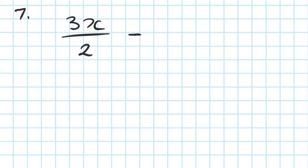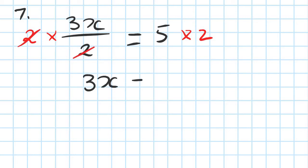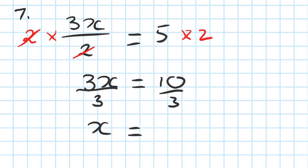Number 7: 3x all over 2 is equal to 5. I want to get rid of the denominator first, so I multiply by 2 on the left and by 2 on the right — whatever you do on one side you must do on the other. That cancels, leaving 3x equals 10. Then divide both sides by 3, so x equals 10 over 3, which is 3 and a third.